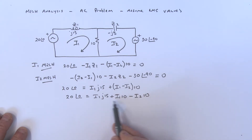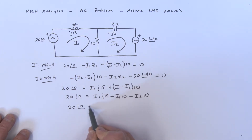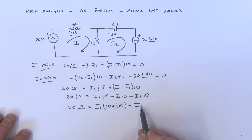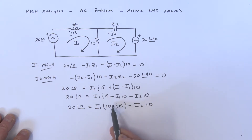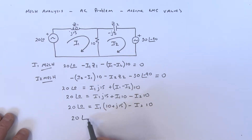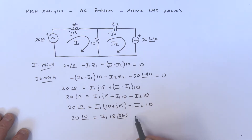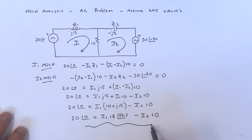Factoring out I1: 20 angle zero equals I1 times bracket 10 plus J15, minus I2 times 10. In rectangular form we have that, and in polar form: 20 angle zero equals I1 times 18 angle 56.3°, minus I2 times 10. There's a little rounding there — please go ahead and check that.